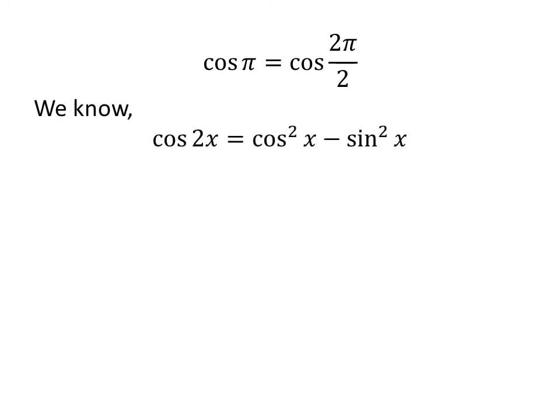As we know, the trigonometry identity cosine of 2 times x is equal to square of cosine of x minus square of sine of x.